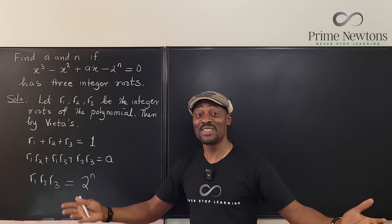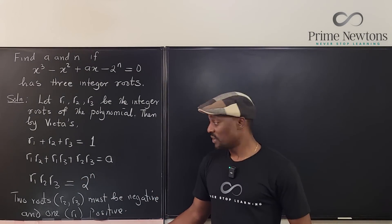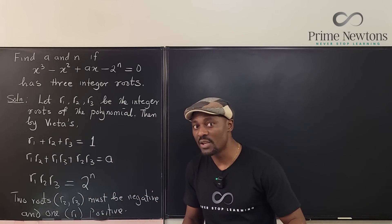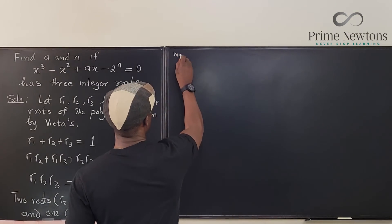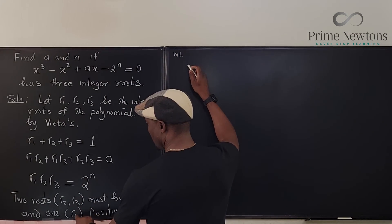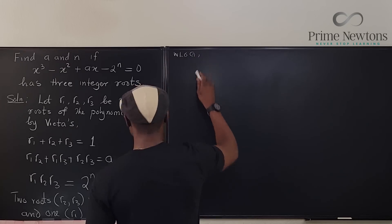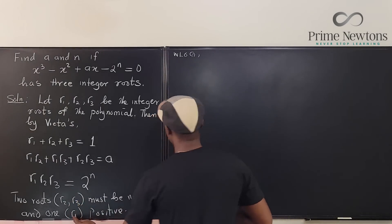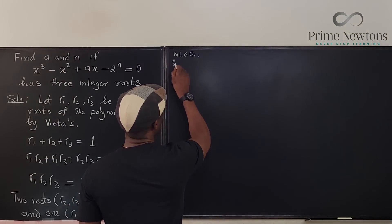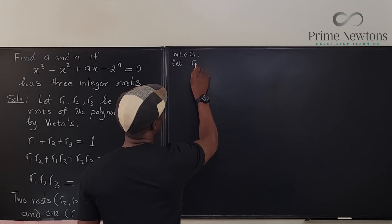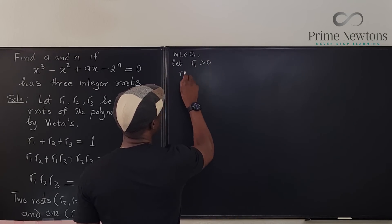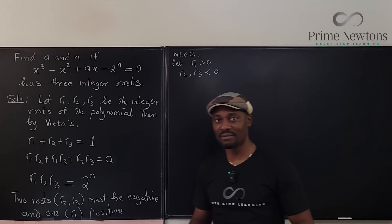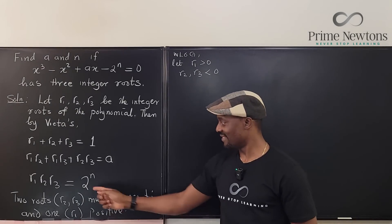The conclusion: two of the roots must be negative and one must be positive. That's it. Once you figure that out, you're good — the question was designed for you to think this way. It reduces the number of guesses. Without loss of generality, let r1 > 0 and let r2, r3 < 0.